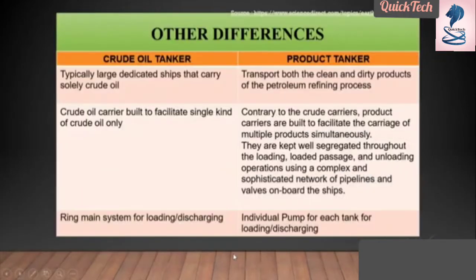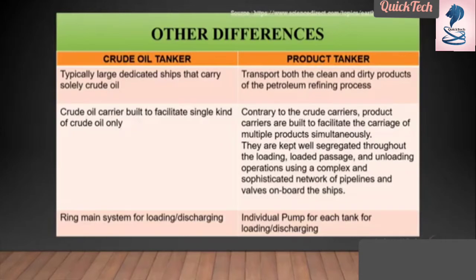The other differences are that crude oil tankers are typically large and are dedicated to carrying only crude oil, whereas product tankers are designed to transport both clean and dirty oil for the petroleum refining process. The crude oil tanker can carry only a single kind of crude oil.